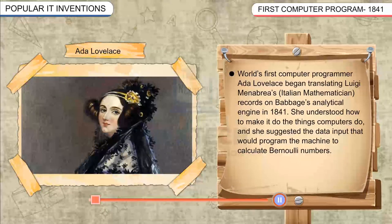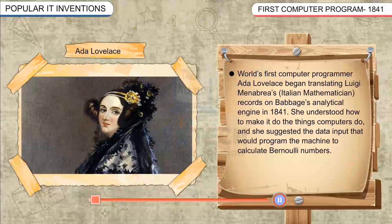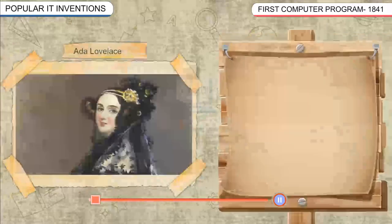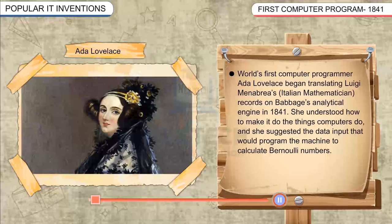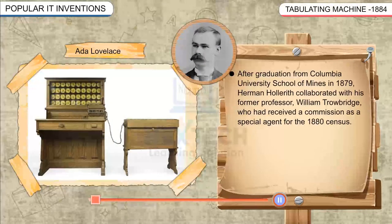First Computer Programme, 1841. The world's first computer programmer, Ada Lovelace, began translating Luigi Menabrea's Italian mathematician records on Babbage's Analytical Engine in 1841. She understood how to make it do the things computers do, and she suggested the data input that would program the machine to calculate Bernoulli's numbers.